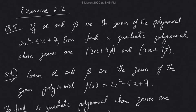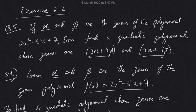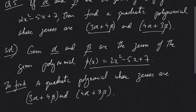Hello friends, welcome back. Let's continue with Exercise 2.2, Question Number 5. If alpha and beta are the zeros of the polynomial 2x squared minus 5x plus 7, then find the quadratic polynomial whose zeros are given. We already have a polynomial given to us, and the zeros alpha and beta are already mentioned.